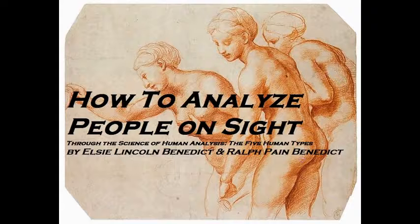Part 1 of Chapter 1 — How to Analyze People on Sight, by Elsie Lincoln Benedict and Ralph Payne Benedict. Recording by Stephanie Lee. The Alimentive Type: The Enjoyer. Note: bear in mind at the beginning of this and every other chapter that we are describing the extreme or unmixed type. Before leaving this book you will understand combination types and should read people as readily as you now read your newspaper.